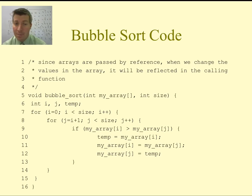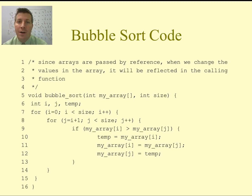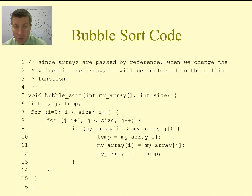Bubble sort performs more swaps, so it might take slightly longer. If the number of elements in your array is relatively small, bubble sort and selection sort are probably going to be very similar in their running times. Bubble sort is very popularly used — just two for loops, a comparison statement, and then a swap. That is all there is to a bubble sort. Take an array, walk through the code, and make sure you figure out how it sorts the array correctly.